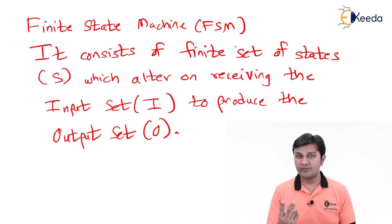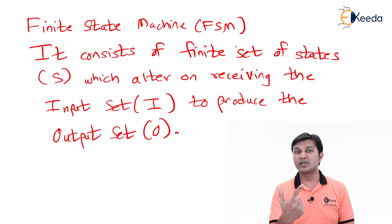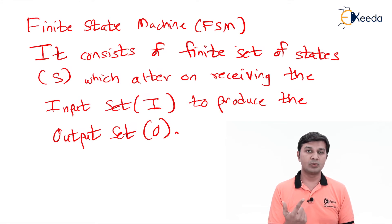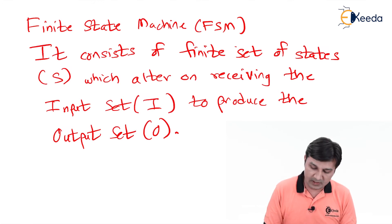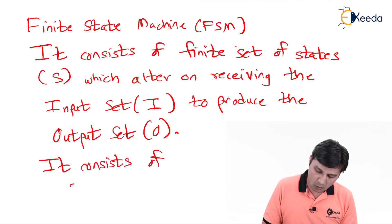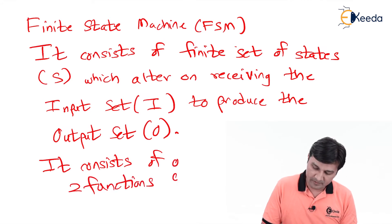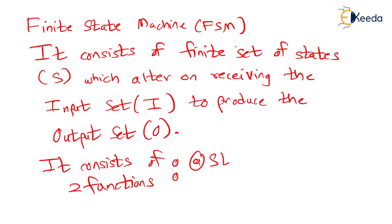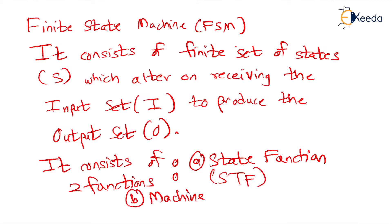The FSM basically consists of two important functions. The first function is called the State Function, abbreviated as STF. The second function is called the Machine Function, abbreviated as MAF — not MF, but MAF. So the finite state machine consists of a state function and a machine function.